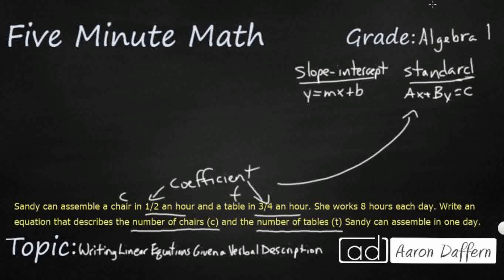So let's see what my chair is. My chair is half an hour. So I'm just going to go ahead and put that, I could either write it in a decimal form or I can write it in a fractional form. So half an hour per chair or I could do 0.5 per chair. And then each table is three quarters of an hour. That's going to be my T.